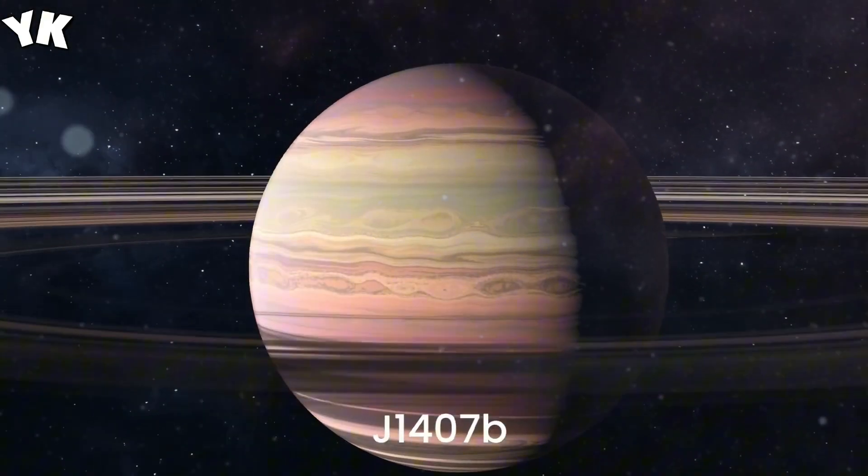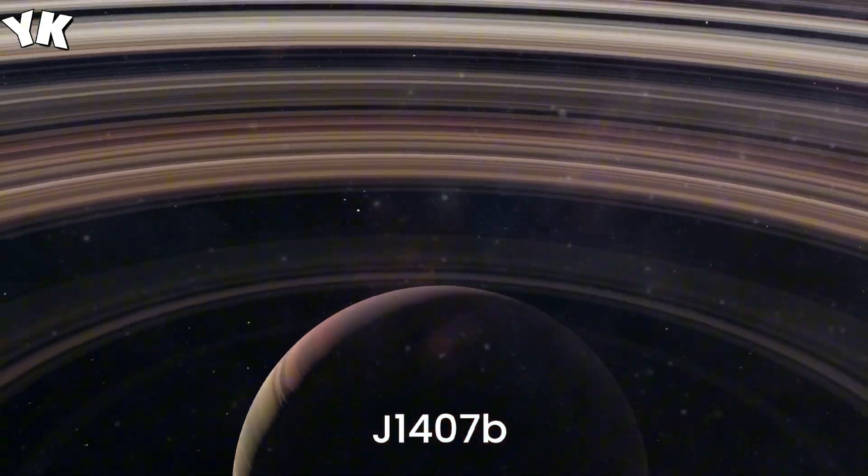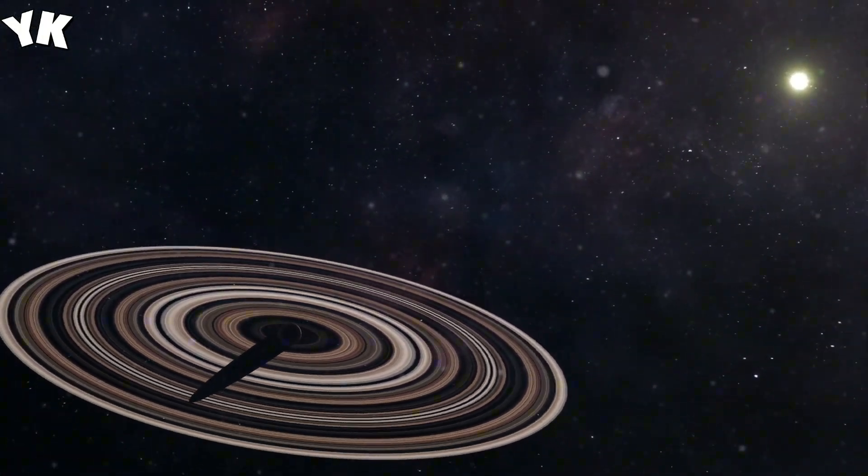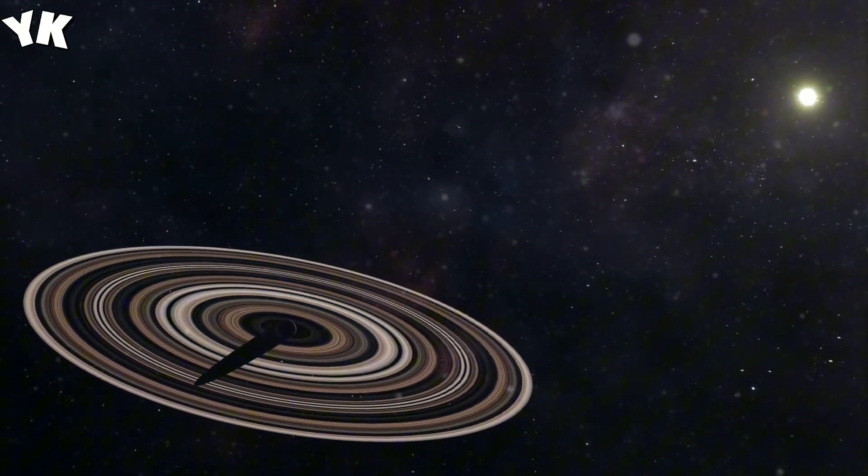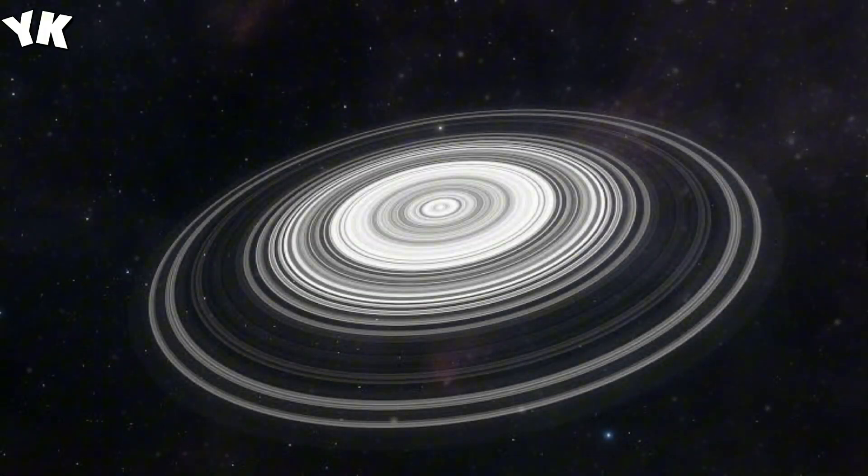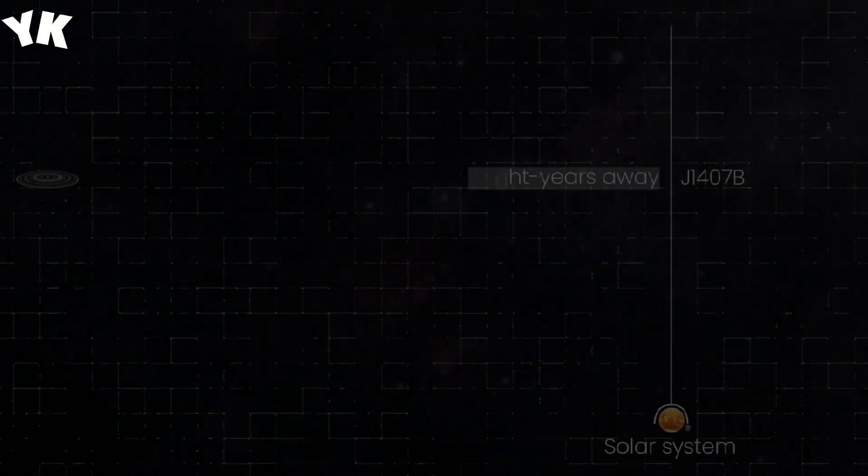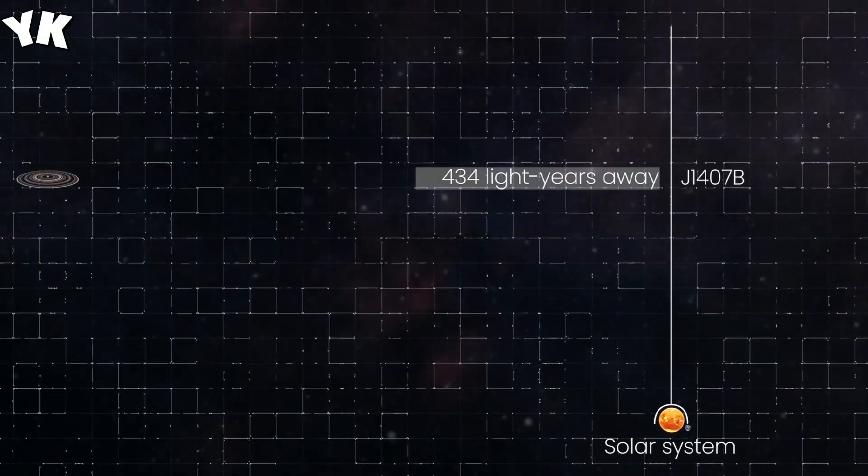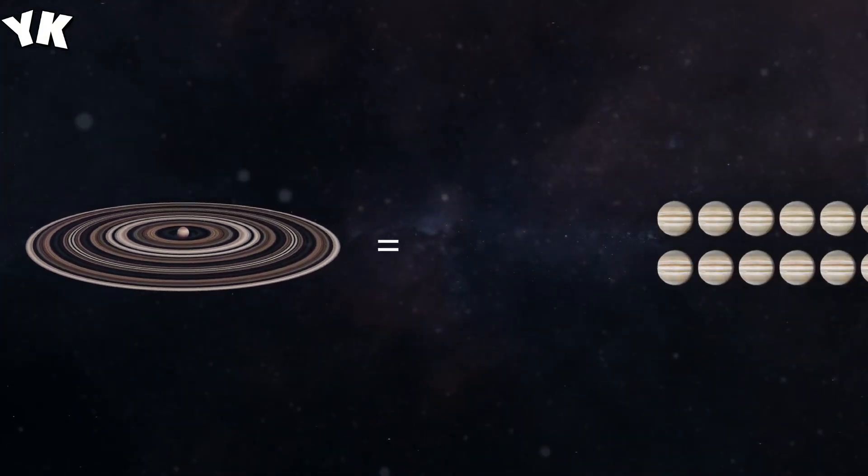J-1407B, Saturn on steroids. Our first stop takes us 434 light-years away from Earth to a place that's like Saturn on steroids. Scientists call it J-1407B, and it's a giant among giants, with a ring system 200 times larger than Saturn's. Imagine the night sky dominated by such colossal rings.